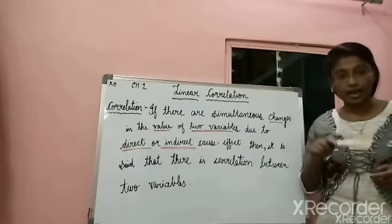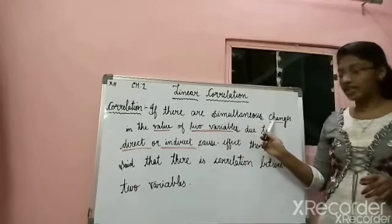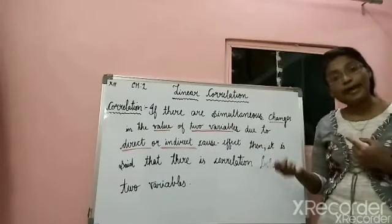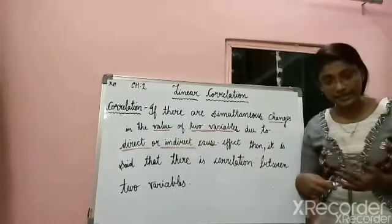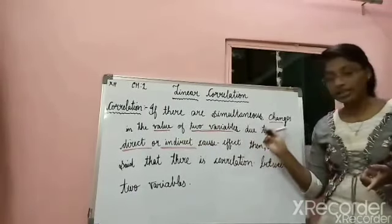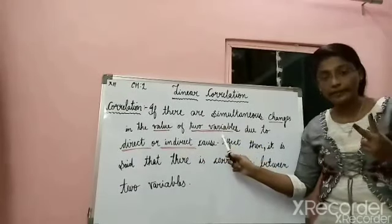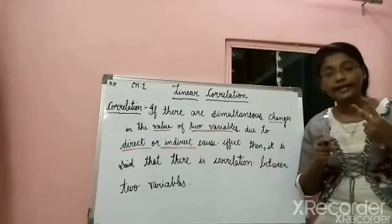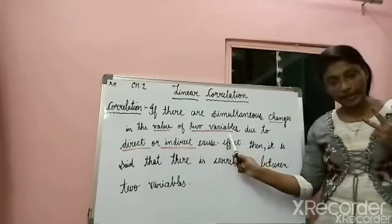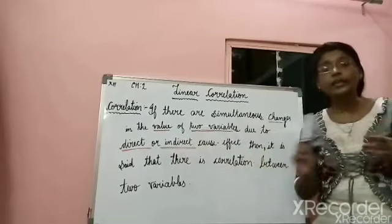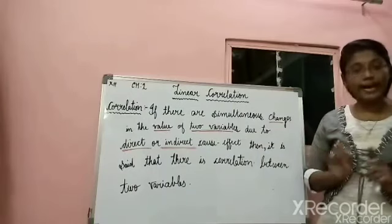For example, my expenses and my savings — simultaneous changes occurring in the value of expenditure and savings. Any changes occurring in the value of these two variables, directly or indirectly affecting one another — we have to take that into consideration.